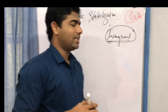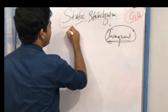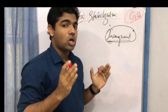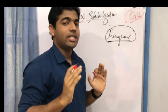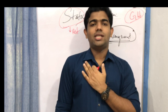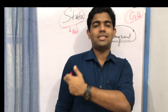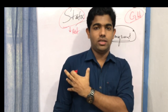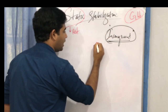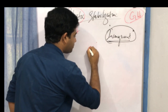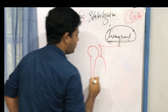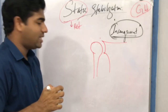Static stabilization means the shoulder joint is at rest — it is not moving. When the arm is by the side and not moving, this is the static phase of the shoulder. In such a phase, just imagine: here is the humeral head and here is the glenoid fossa.